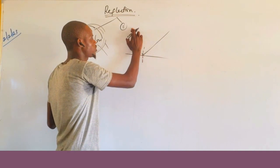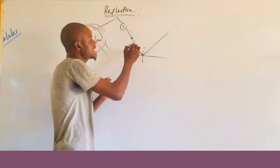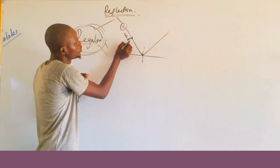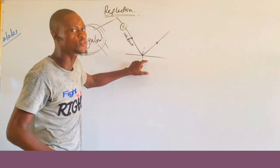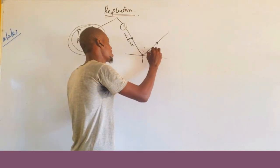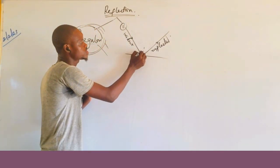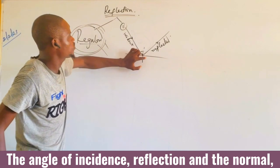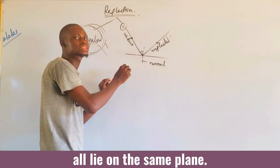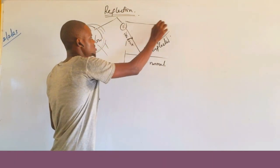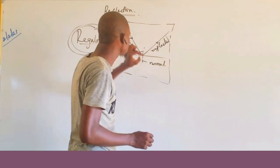According to the first law of reflection, the incident ray is a ray coming directly from a source of light, while the reflected ray is a ray coming from the surface. The first law states that the incident ray, the reflected ray, and the normal all lie on the same plane.